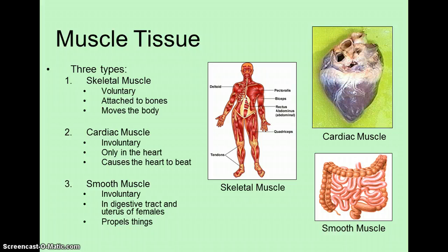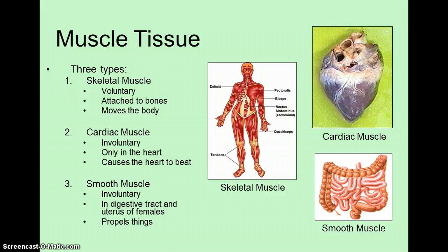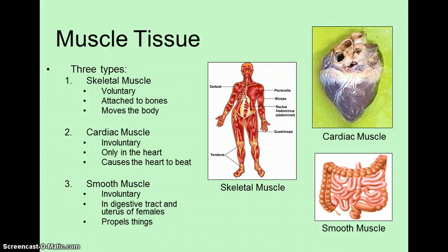The last type of muscle in the human body is smooth muscle. It is involuntary like cardiac muscle, so we don't, and we can't, plan its contraction. We find this particular type of muscle in our digestive tracts and also in the uterus of females. In both places, it is used to propel something through the body, either food or a baby, by putting pressure on it while contracting or shortening its cells.